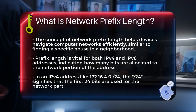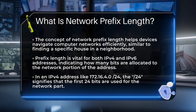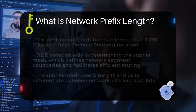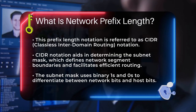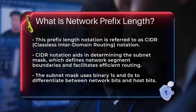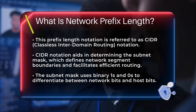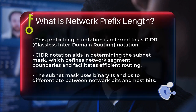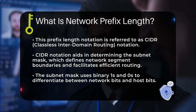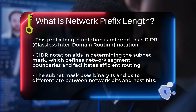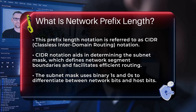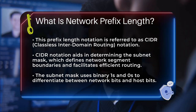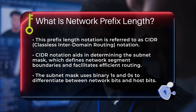For example, in an IPv4 address like 172.6.4.0/24, the slash 24 indicates that the first 24 bits of the address are used for the network part. This notation is known as CIDR — Classless Interdomain Routing Notation. It helps in determining the subnet mask, which is essential for defining the boundaries of a network segment and for efficient routing.